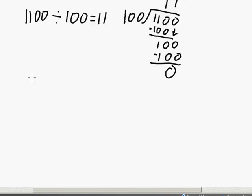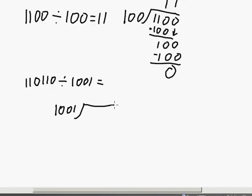The final example is a little bit longer — a few more bits. We've got 110110 divided by 1001. Let's rewrite it: 1001 into 110110. What's the first number that 1001 goes into more than zero times? 1001 goes into 1101 one time.